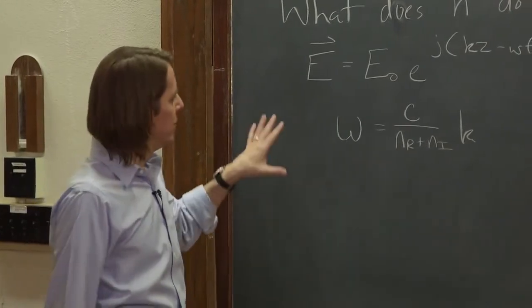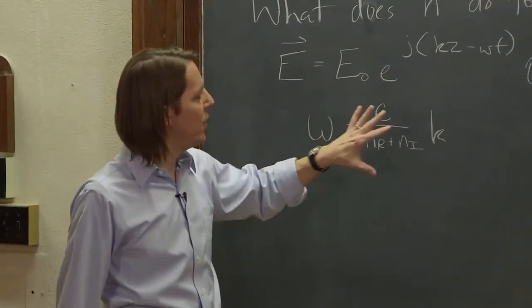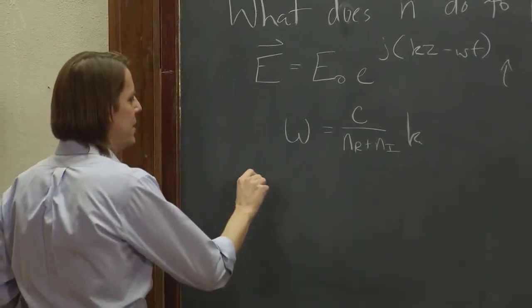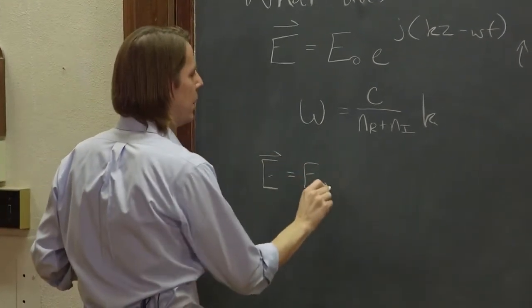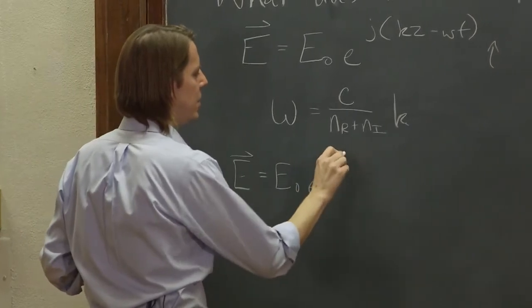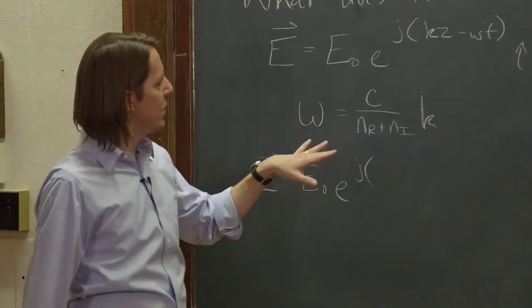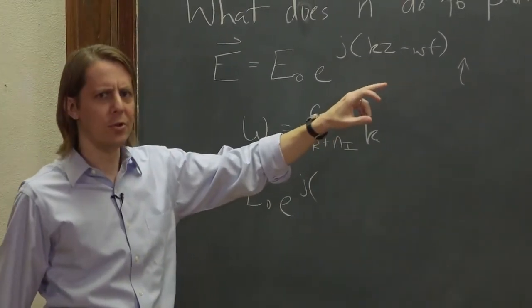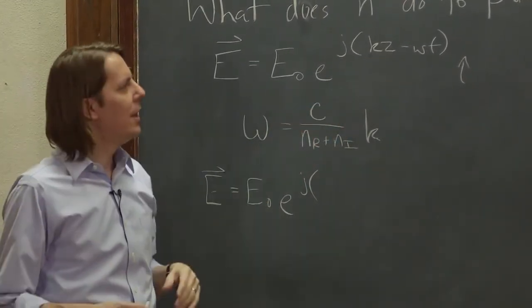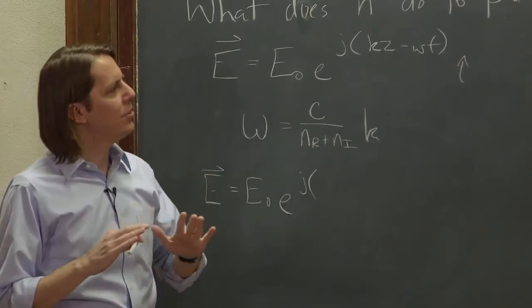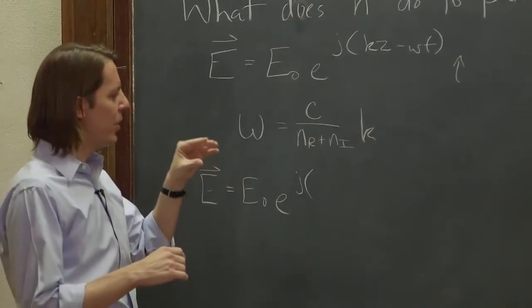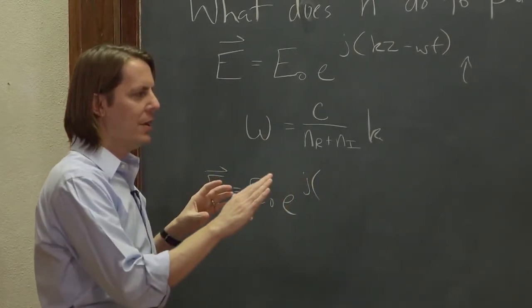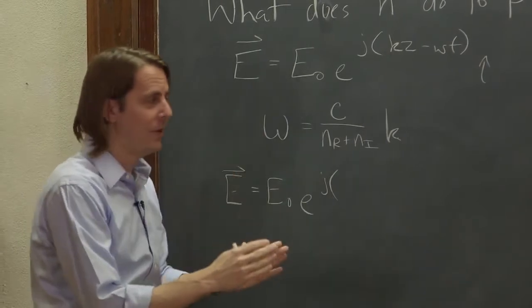So now, what we want to do is plug the dispersion relation into here. You could ask yourself, should I solve it for k and put it here, or should I solve it for omega and put it here? To answer that, you've got to think about what's really happening here. We're talking about light in vacuum, and then light in the dielectric. In the next unit, we'll talk about how it gets from one to the other at the interface.